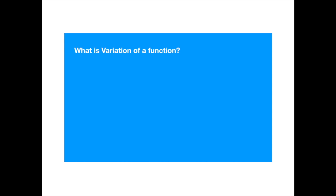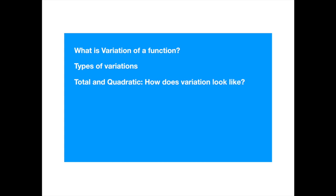We will start with an informal account of what is meant by the variation of a function. We then give the mathematical definition of different types of variations and mention some generalizations. We then focus on the total and quadratic variations, and show mathematically and then visually their calculations for a few simple deterministic functions. We then derive a formula for the quadratic variation of the Brownian motion paths, showing that the formula holds pathwise.